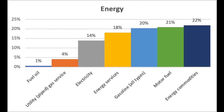Let's go a little deeper and start with energy. Here are the various items that comprise the energy component of CPI with their weightings. Fuel oil carries a 1% weight — not a 1% inflation number, but a 1% weight. Utility or natural gas: 4%. Electricity: 14% of the overall 7% CPI energy number. Energy services: 18%. Gasoline: 20%. Motor fuel: 21%. And energy commodities: 22% of the overall CPI number.